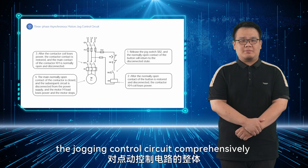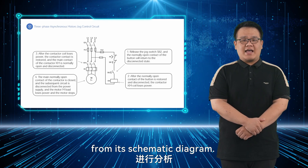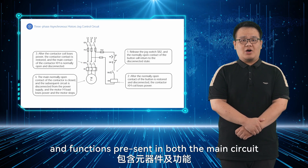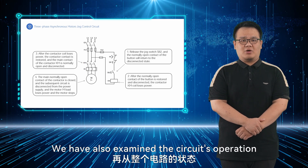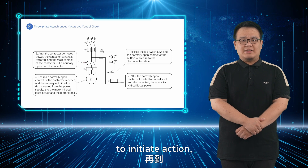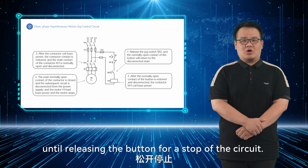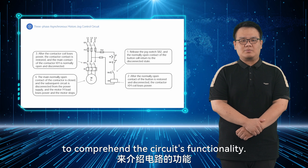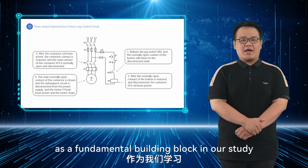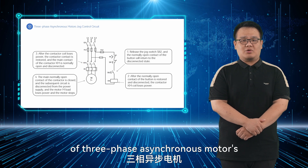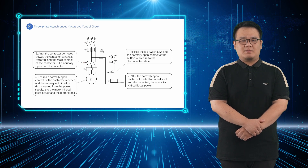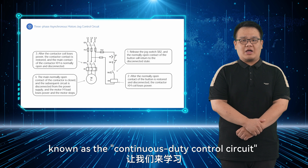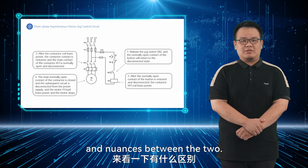We have analyzed the jogging control circuit comprehensively from its schematic diagram, discussing the components and functions present in both the main circuit and the auxiliary circuit. We have also examined the circuit's operation from pressing the jogging button to initiate action, until releasing the button to stop the circuit. The jogging circuit serves as a fundamental building block in our study of three-phase asynchronous motor control circuits. Moving forward, let's delve into another type of control circuit known as the continuous duty control circuit, to identify the differences and nuances between the two.